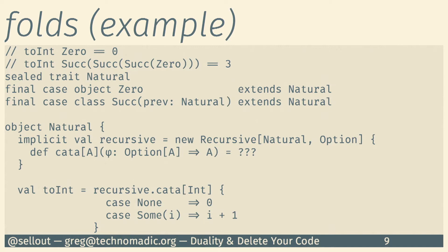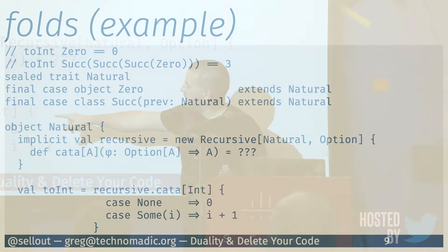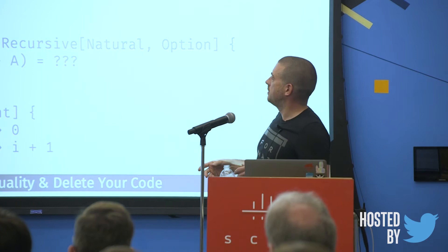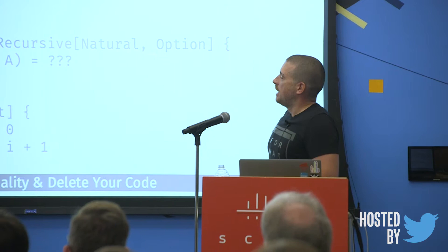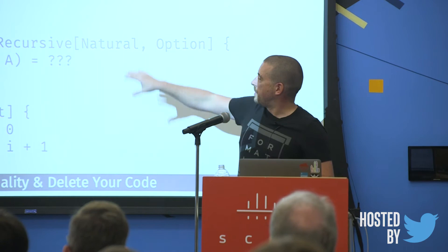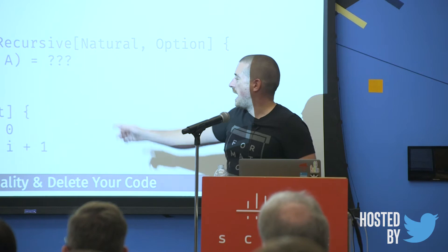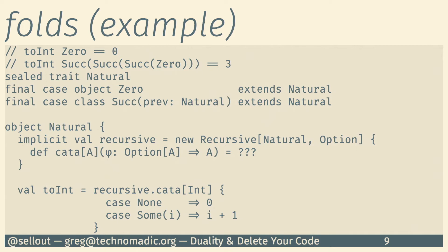To give a simple example: natural numbers. There's a zero case, and then you can have a successor of some other natural number. Zero is just zero, and successor-successor-successor of zero is three — a simple recursive, self-referential structure. We can associate the natural type with the option functor. None and zero are basically the same thing, and successor and Some are the same thing except Some has a type parameter where natural was, removing the recursion. This is a simple implementation of how you'd use Cata — handle the two cases (zero and successor) saying what to do in each, and it applies over the full natural number.